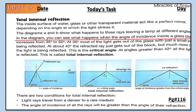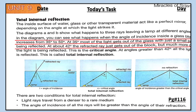In the diagram you can see what happens when the angle of incidence inside a glass increases from 35 degrees to 50 degrees. At 35 degrees, most of the light gets out of the glass and some is reflected. At about 42 degrees, the reflected ray just gets out of the block, but much more of the light is being reflected.